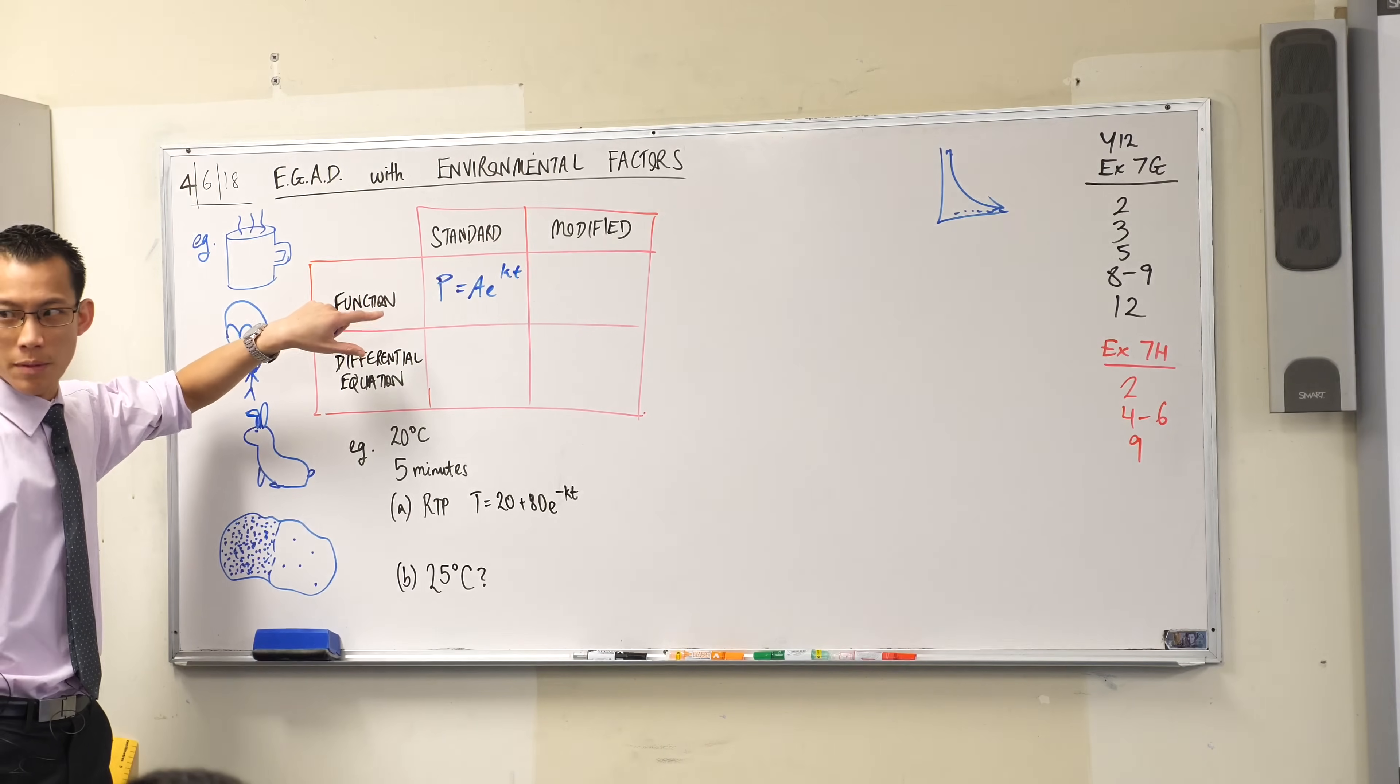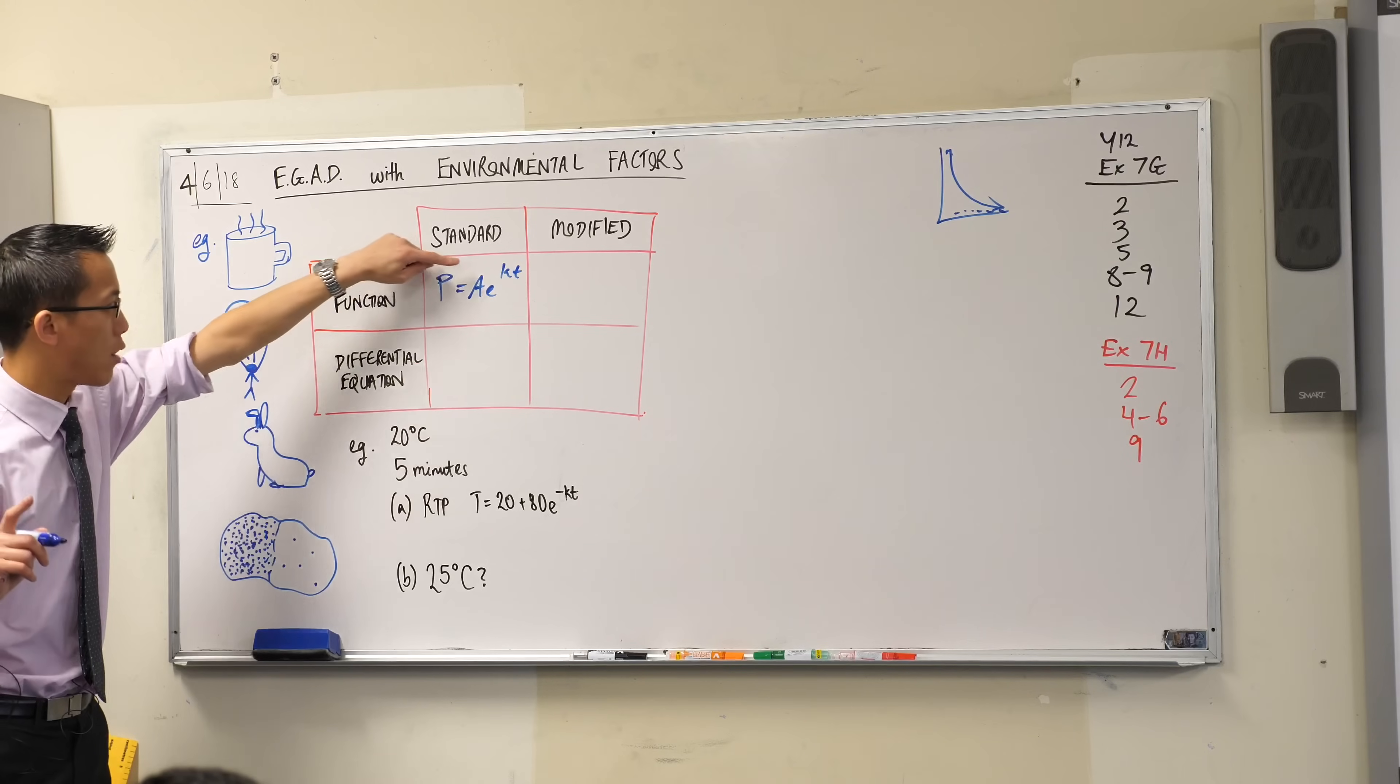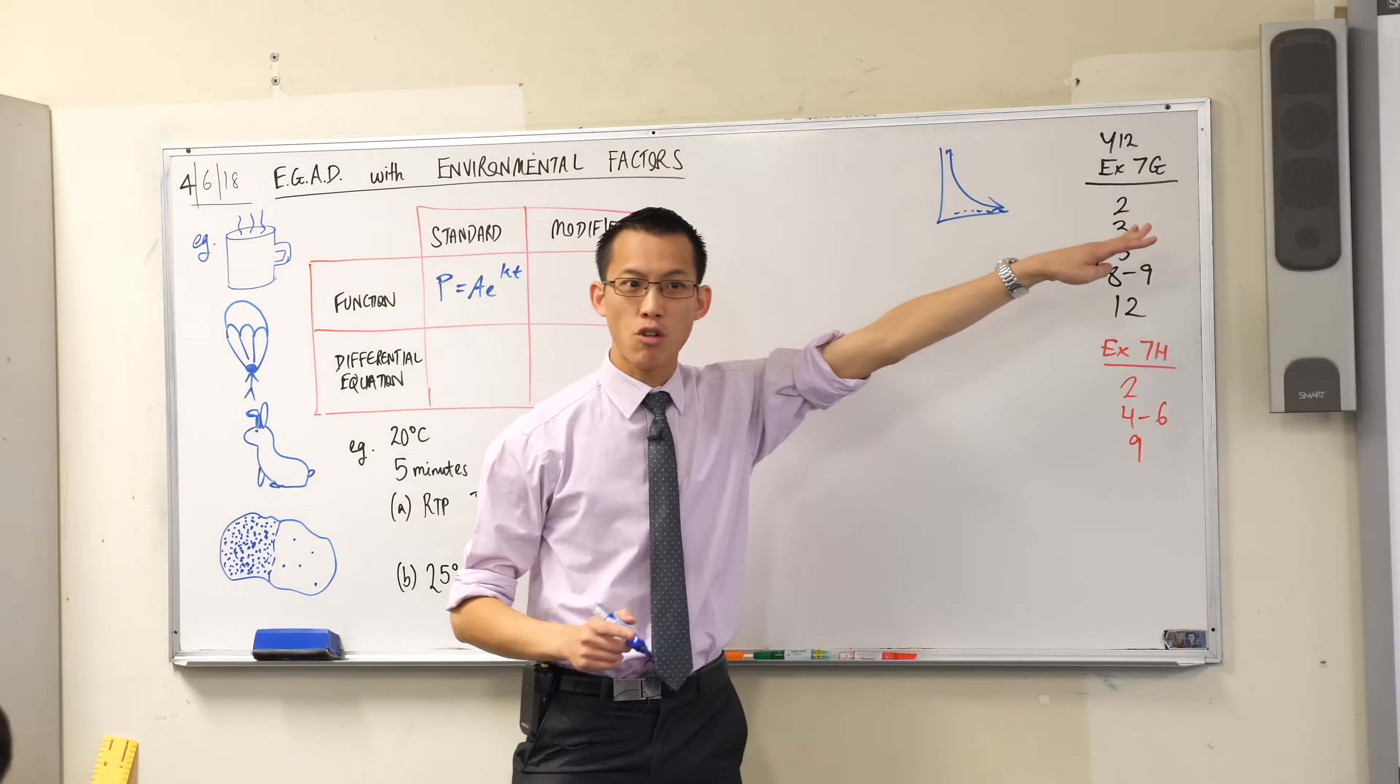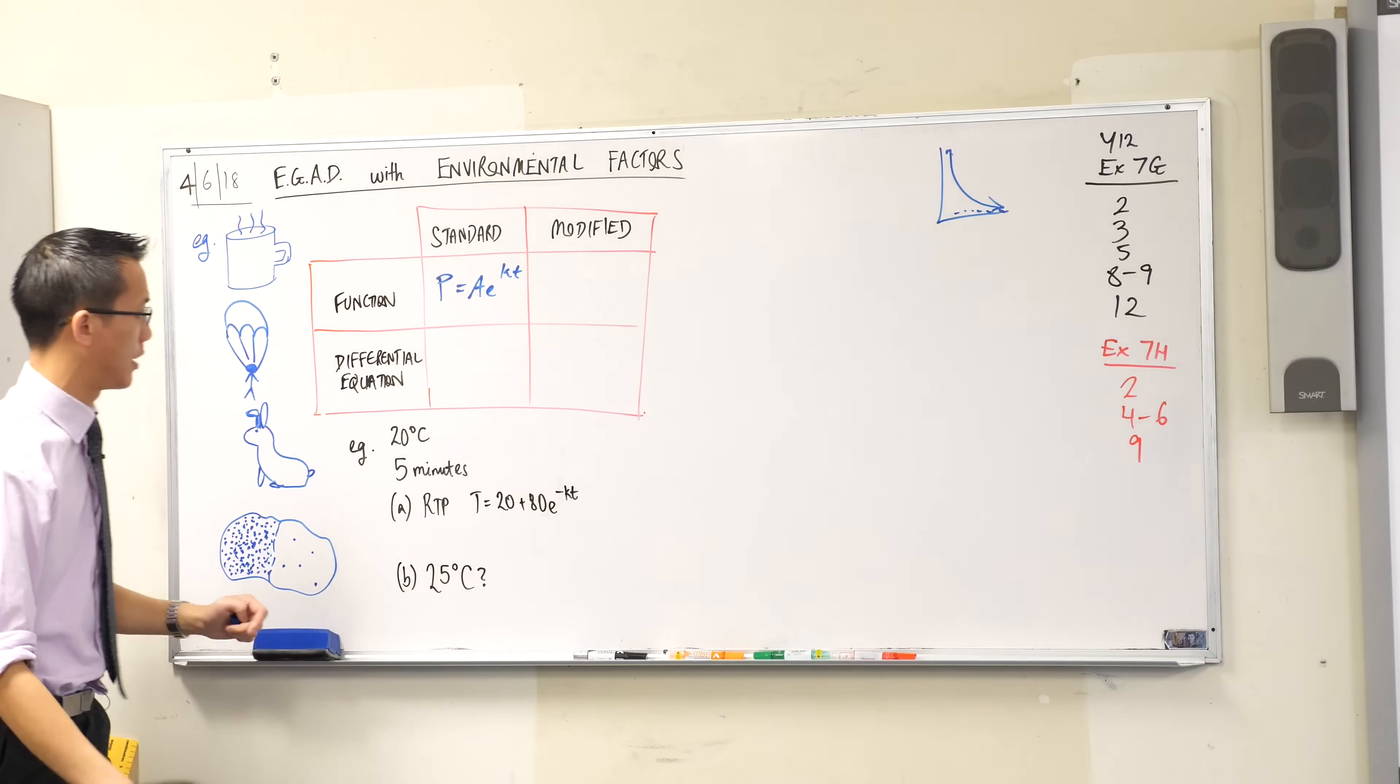There'd be a single thing to change. We just throw a minus sign here, and then we get it's dropping off because we reflected it horizontally.